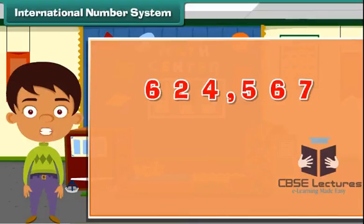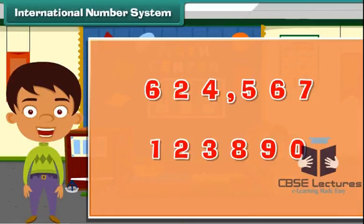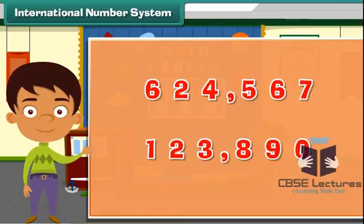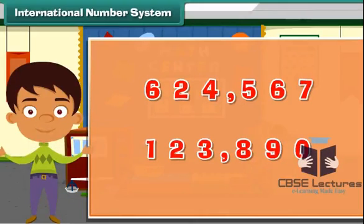Let us look at another number 123890. The international number system will group it as one two three comma eight nine zero. The number is read as one hundred twenty-three thousand eight hundred ninety.